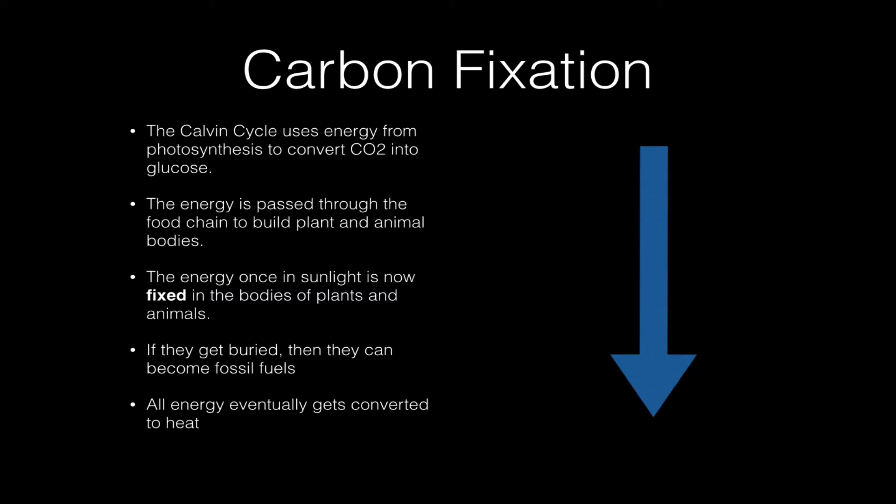This means that the energy that was once in sunlight is now being fixed or stored in the bodies of plants and animals. So if these plants and animals get buried under the ground, they can become what we call fossil fuels, and that energy is stored away because it's being stored in carbon compounds like glucose, cellulose, and keratin.